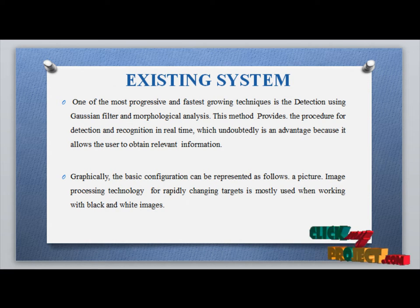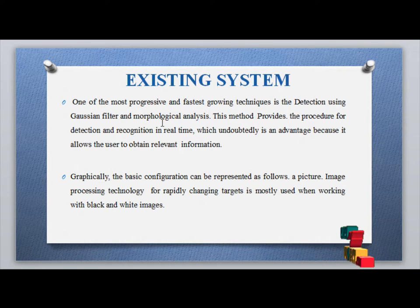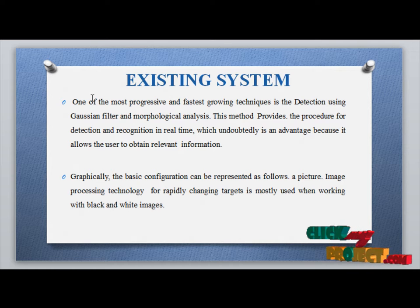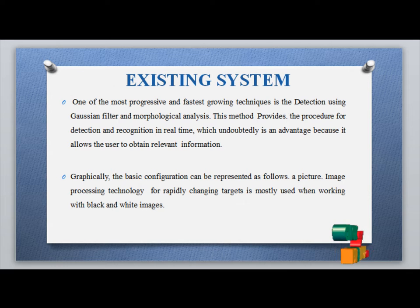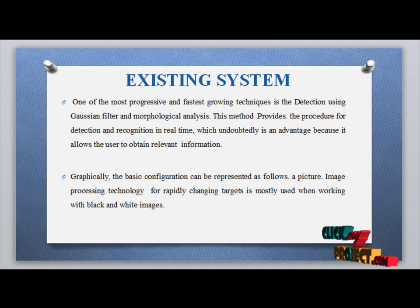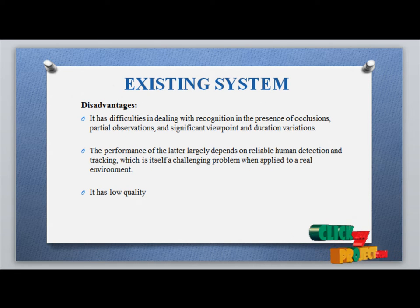One of the most progressive techniques in the existing system is detection using a Gaussian filter and morphological analysis. This method provides a procedure for detection and recognition in real time, which is advantageous because it allows users access to relevant information. Graphically, the basic information is represented by picture image processing technology for rapidly changing targets, and it is mostly used when working with black and white images.